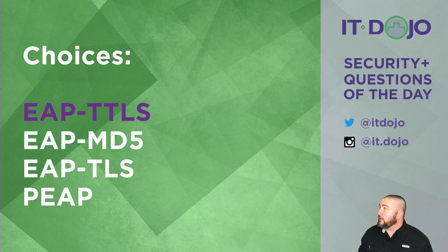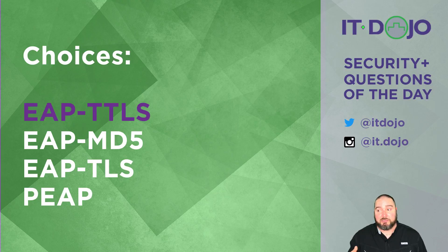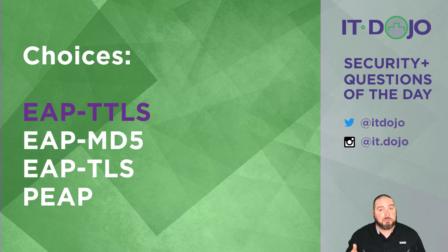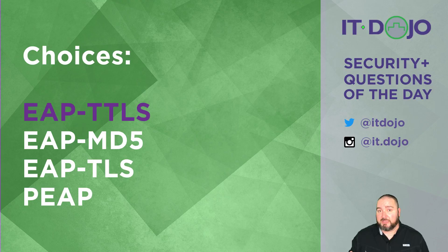Choice number two is EAP-MD5. EAP-MD5 does not require a certificate on the client side, nor on the server side — in fact, it doesn't make use of certificates at all. EAP-MD5 has a lot of problems, particularly as it relates to wireless LANs. First, it only supports one-way authentication: the supplicant authenticates to the authentication server, but not the other way around. Additionally, EAP-MD5 doesn't have any mechanisms that allow for key generation to take place after authentication has occurred.